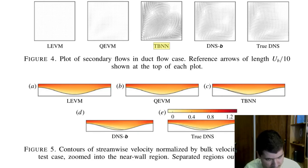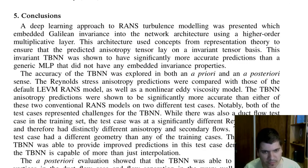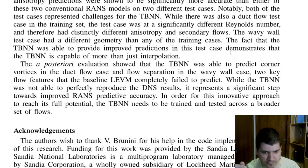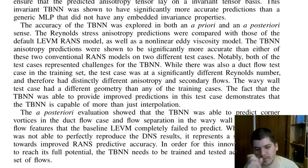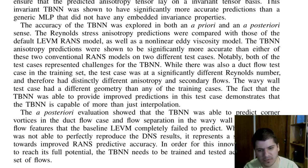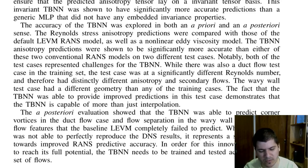Here are further validation and verification results. The authors conclude that the TBNN — which was one of the approaches explored — shows certain room for improvement but great potential for modeling turbulent flows. While the TBNN was not able to perfectly reproduce the DNS results, it presents a significant step towards improved RANS predictive accuracy. For this approach to reach its full potential, the TBNN needs to be trained and tested across a broader set of flows.